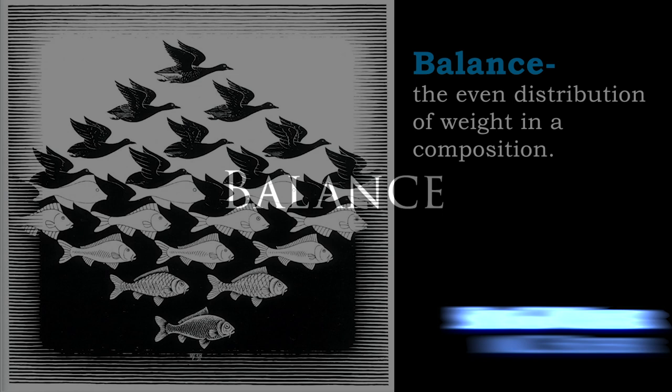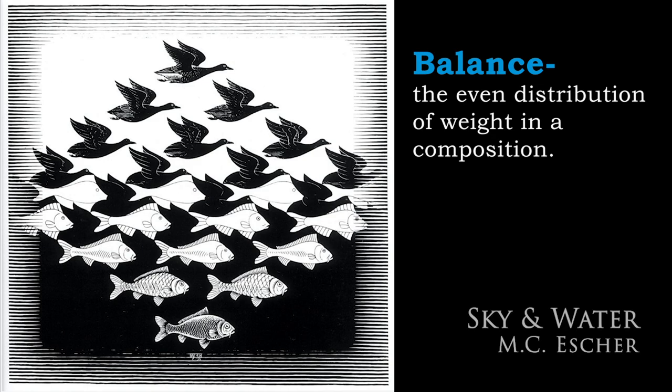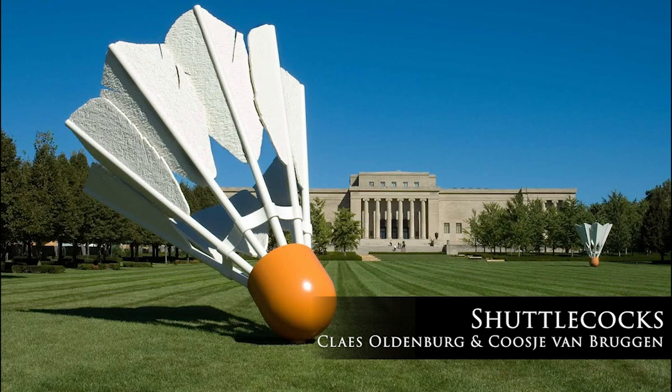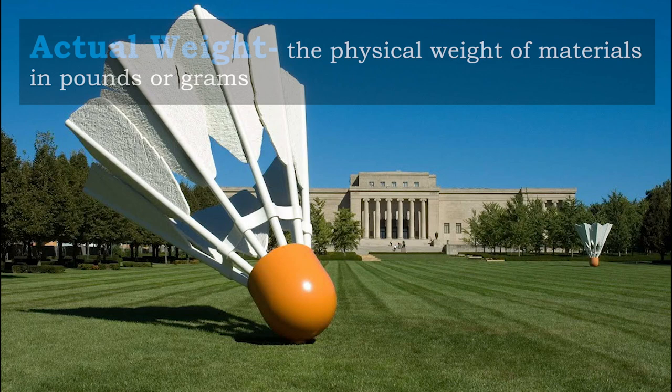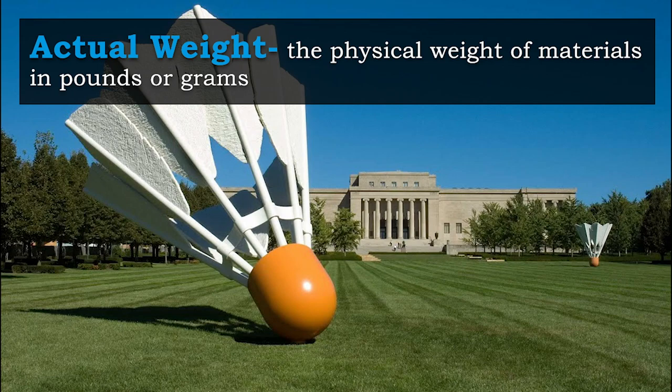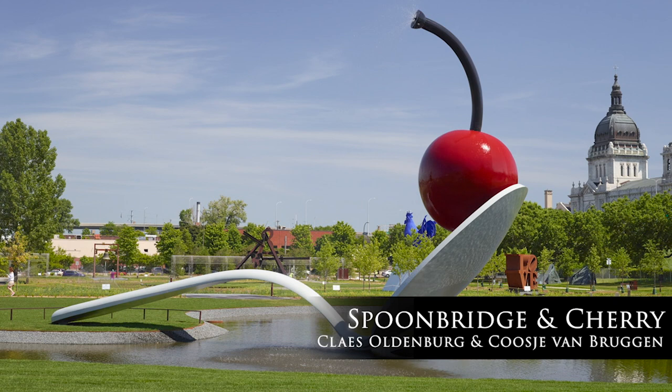Today we will be exploring the principle of art of balance. Balance is achieved through the even distribution of weight in a composition. When I say weight, I can be referring to two different definitions — I might be talking about the actual weight, or how much something physically weighs in pounds or grams, apart from its scale.